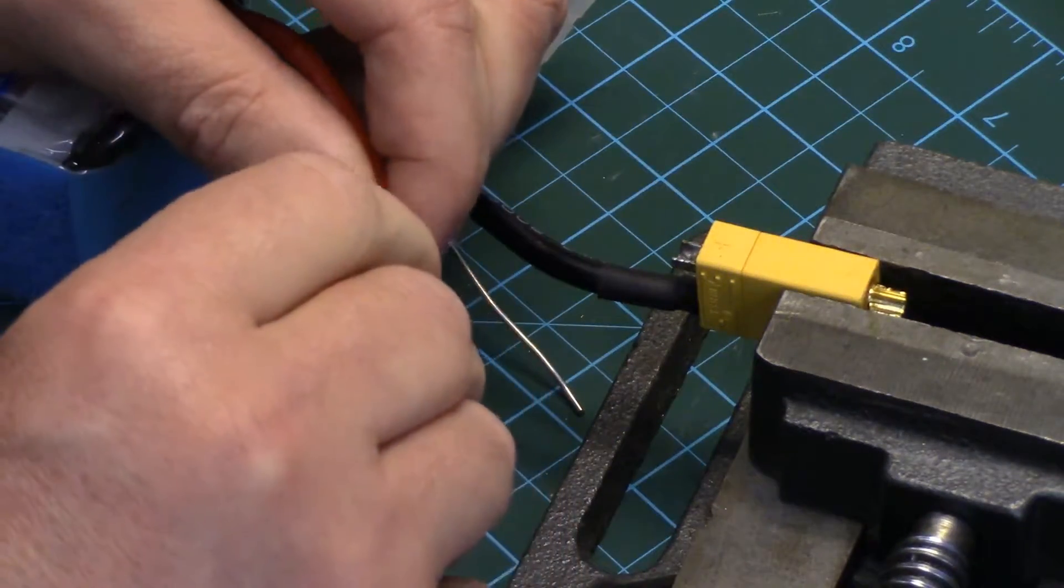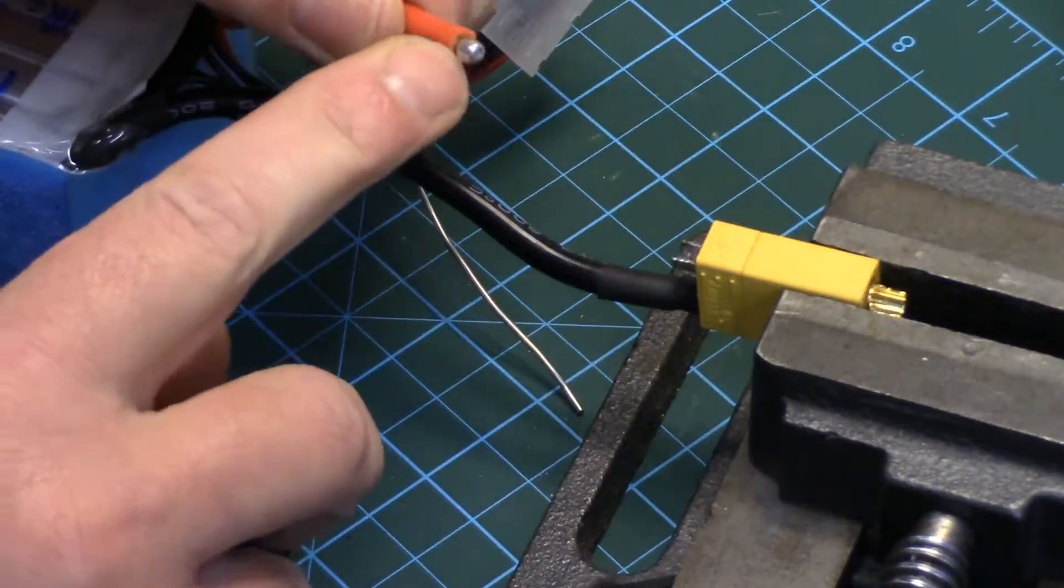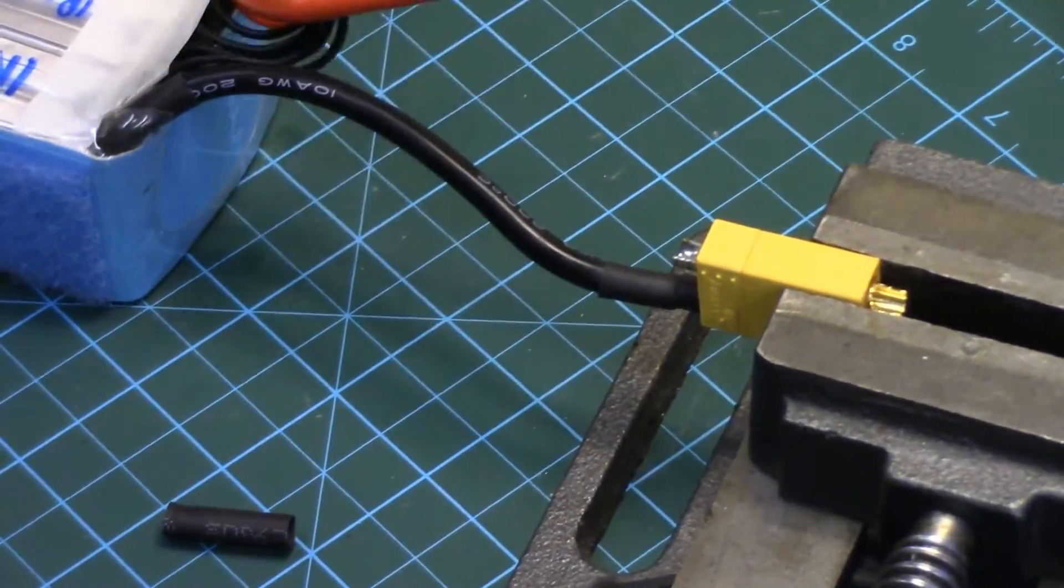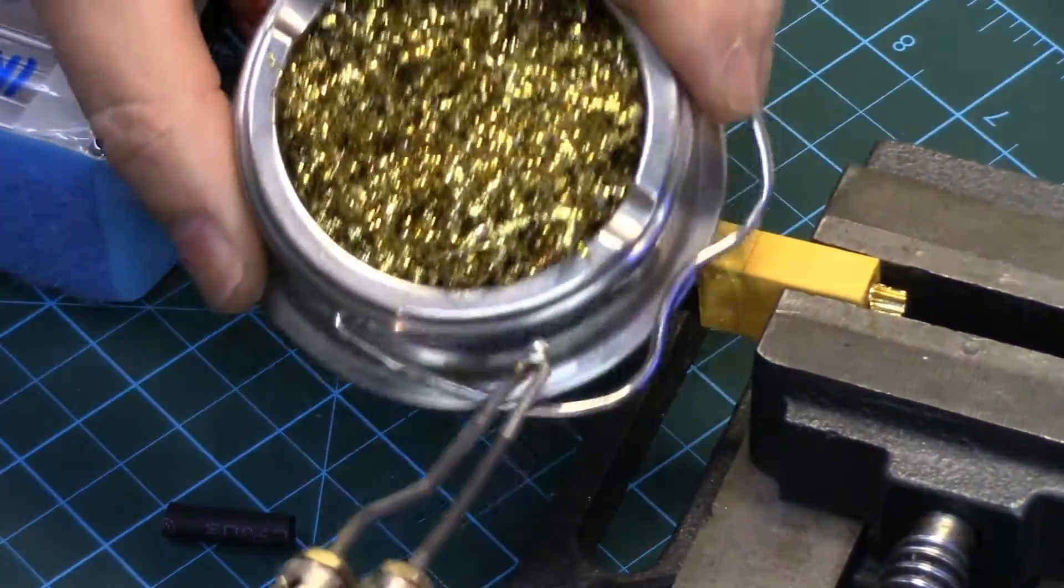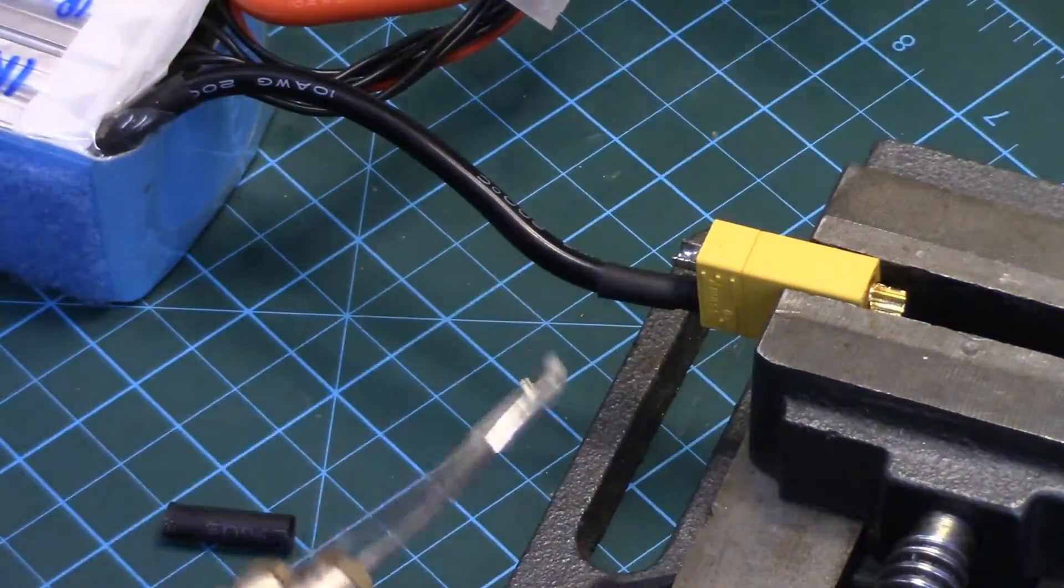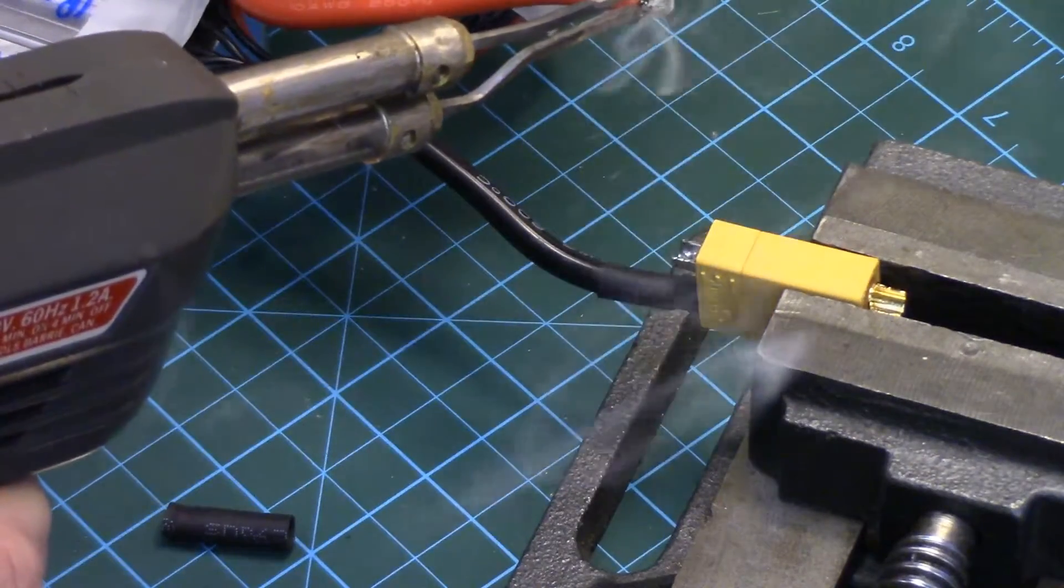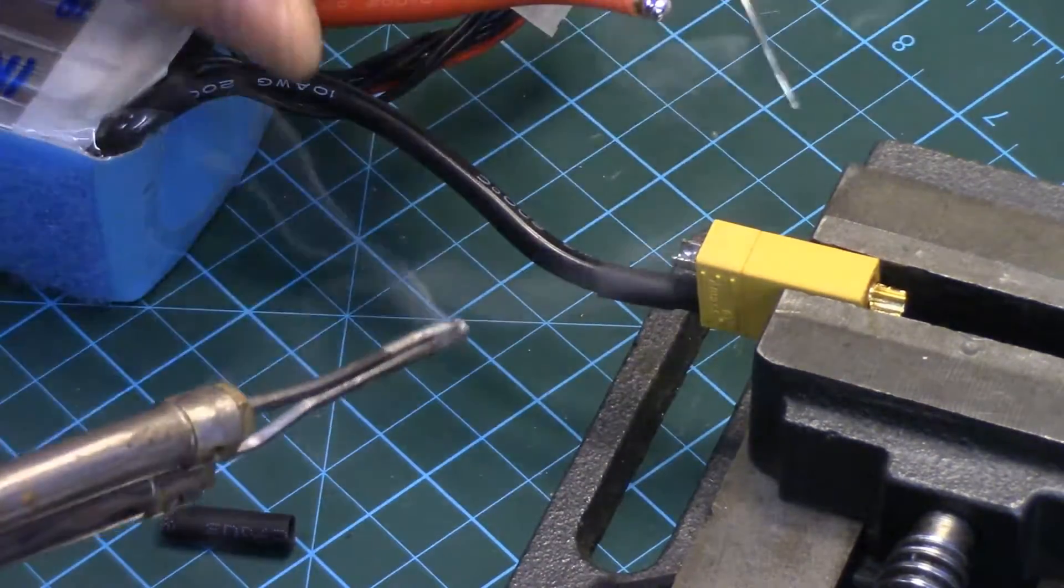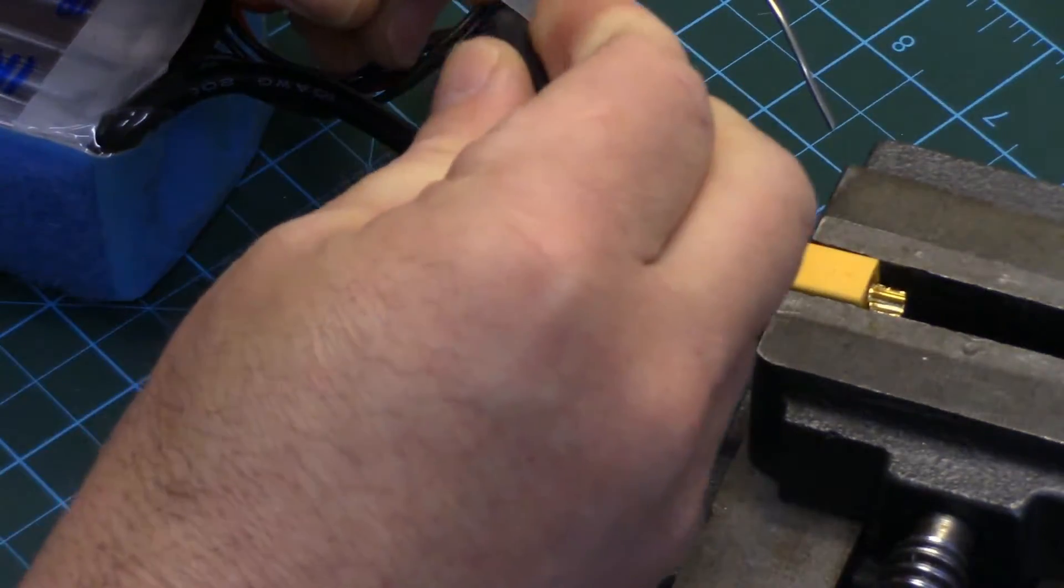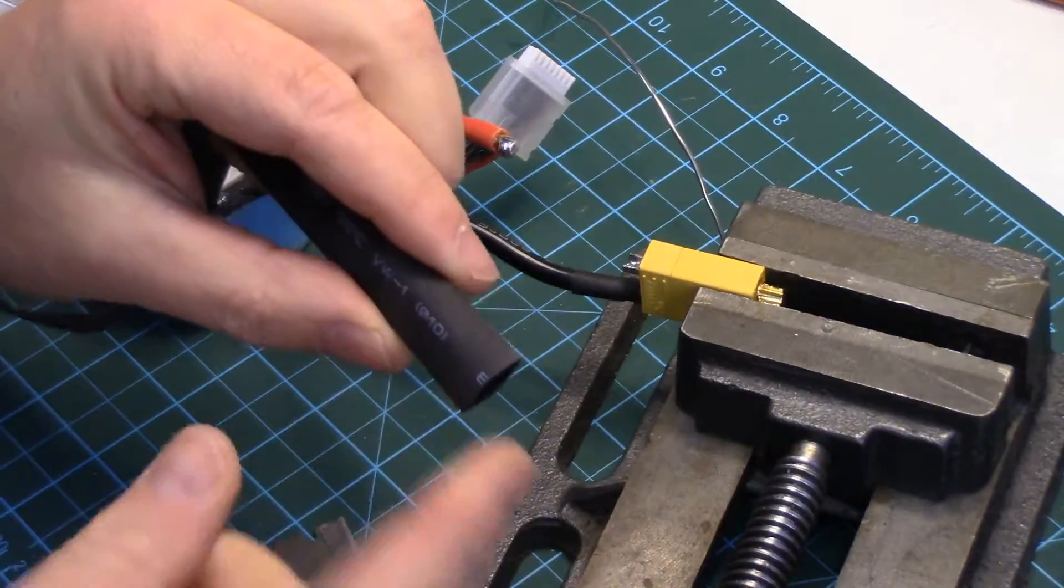Again, take off the insulation, cut it off. Make sure you've got nice, again, a nice tinned end. Clean off our solder tip on the gun. I'm just going to add a little to the wire here. Oops, almost forgot to put the heat shrink on. Actually, I'm going to use some larger heat shrink.